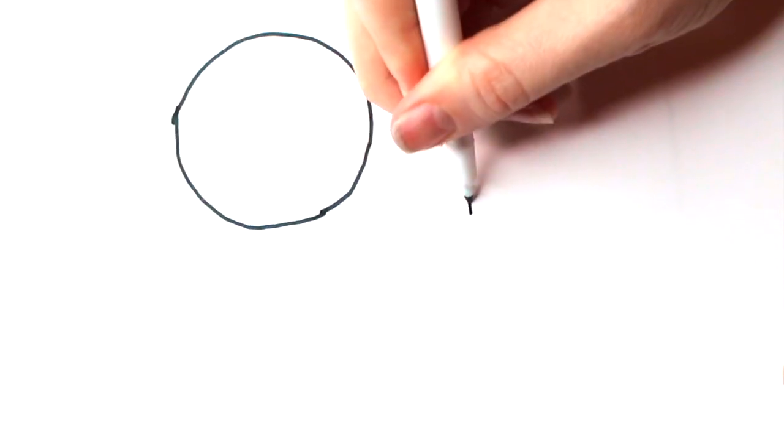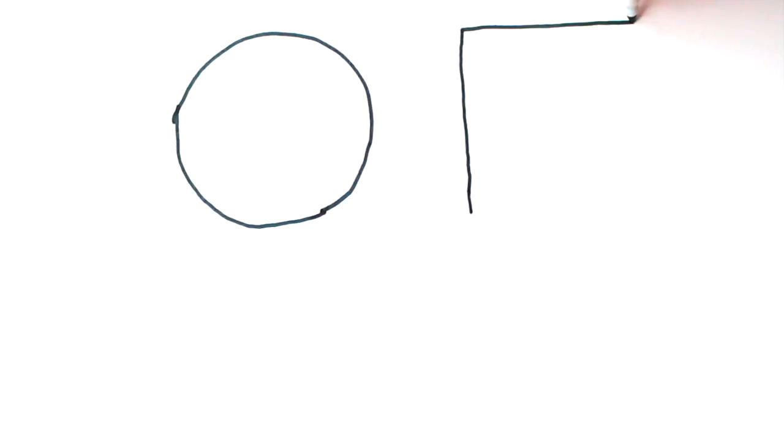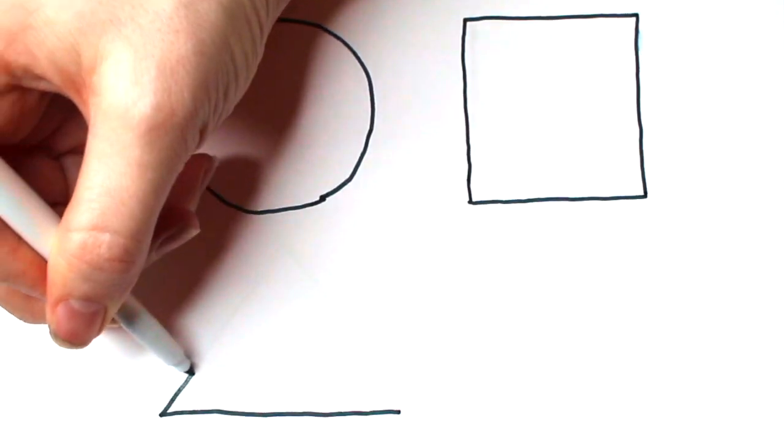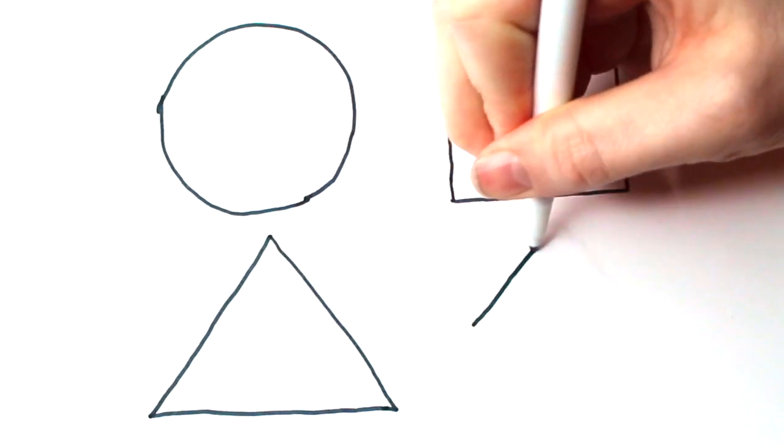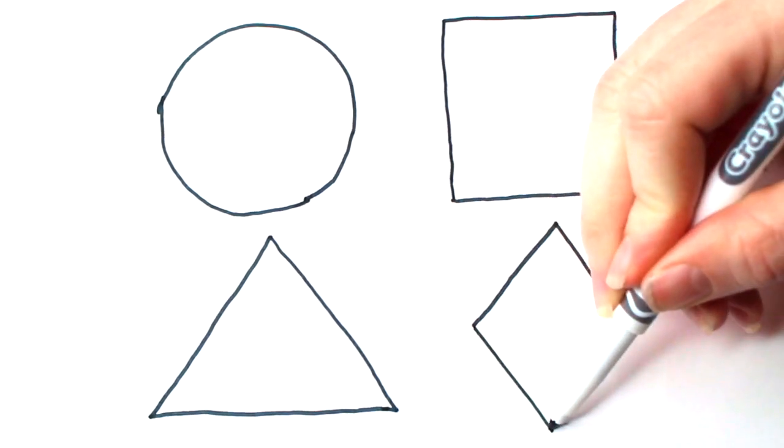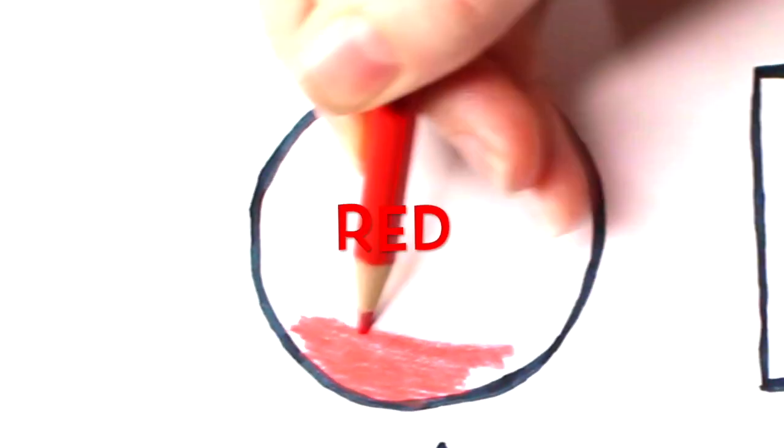Connect the drawing shapes. Circle, square, triangle, diamond. Color time, red.